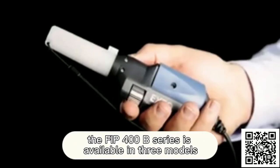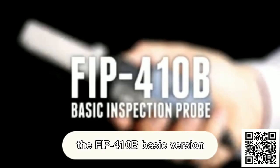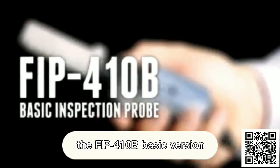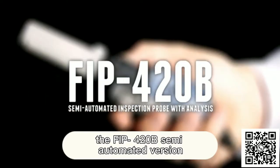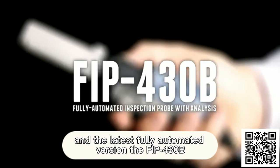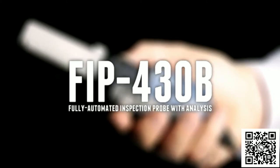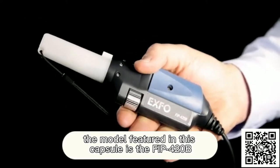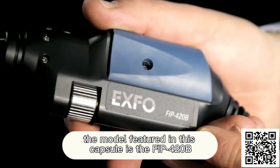The FIP-400B series is available in three models: the FIP-410B basic version, the FIP-420B semi-automated version, and the latest fully automated version, the FIP-430B. The model featured in this capsule is the FIP-420B.